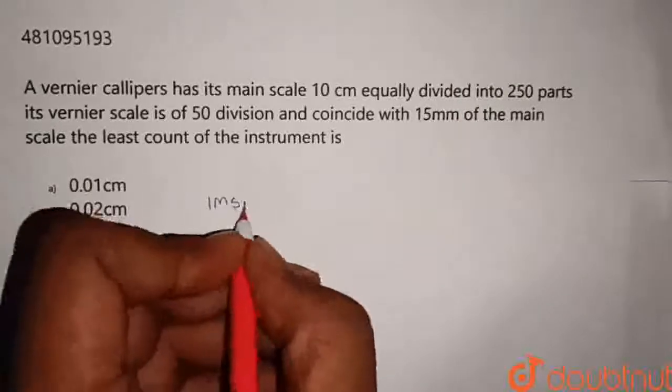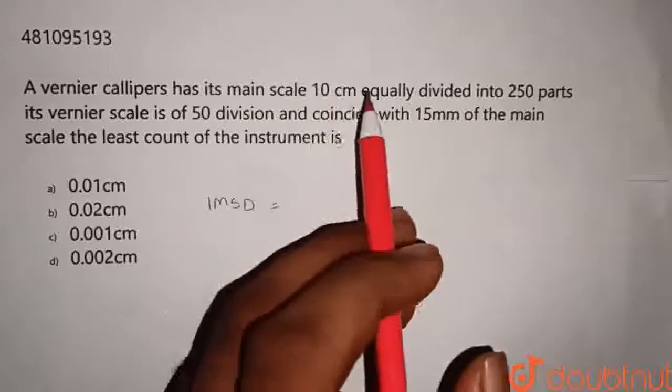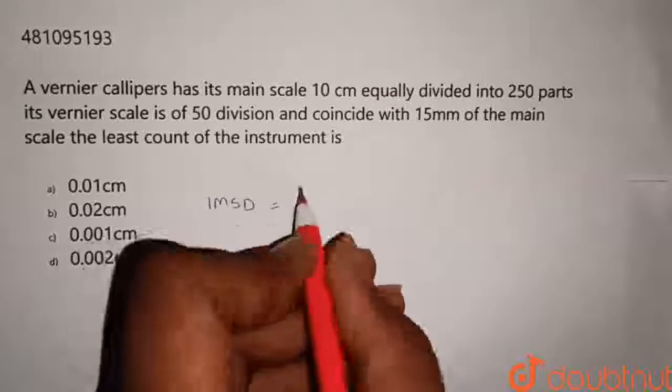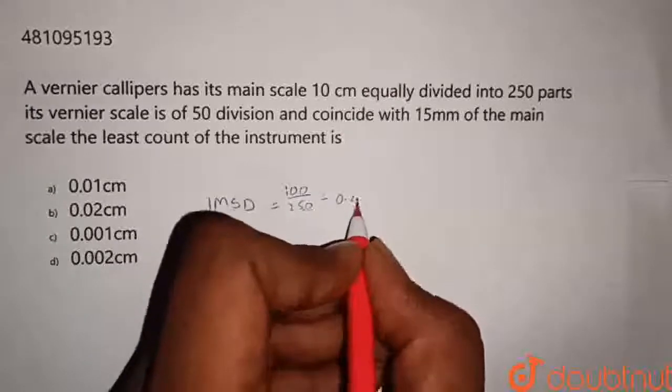Therefore, 1 EMSD is equal to cm by divisions. Let's convert this into mm. 10 cm is nothing but 100 mm, 100 by 250, that is 0.4 mm.